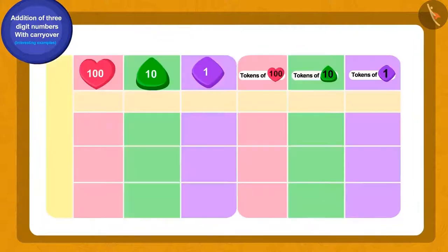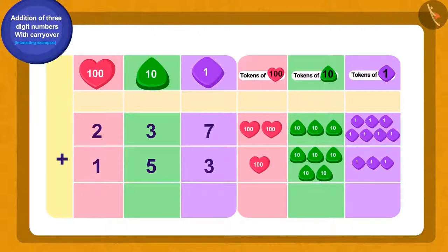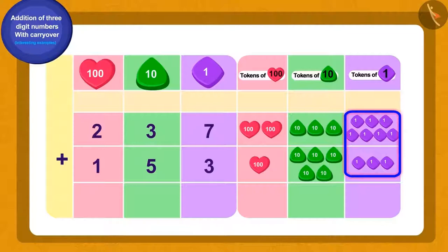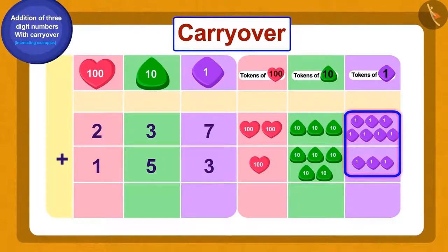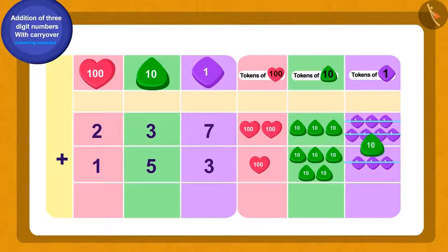What shall we do first? 237 and 153 will be written using tokens. We have a total of 10 ones tokens. What can we do now? Yes, we will use carryover. Add 10 ones tokens to make 1 token of 10s, we will write this 10 token along with the rest of the 10s tokens.